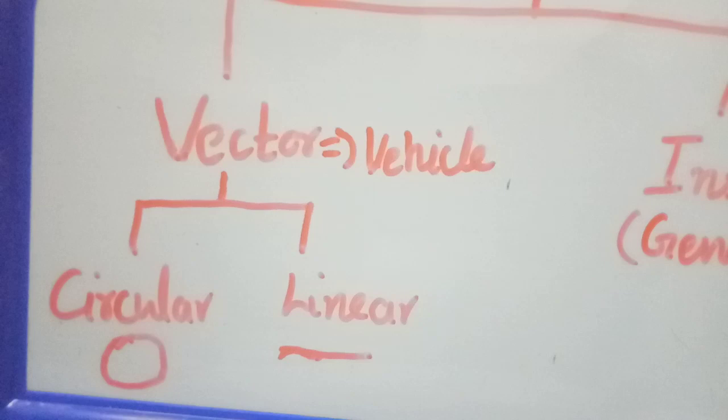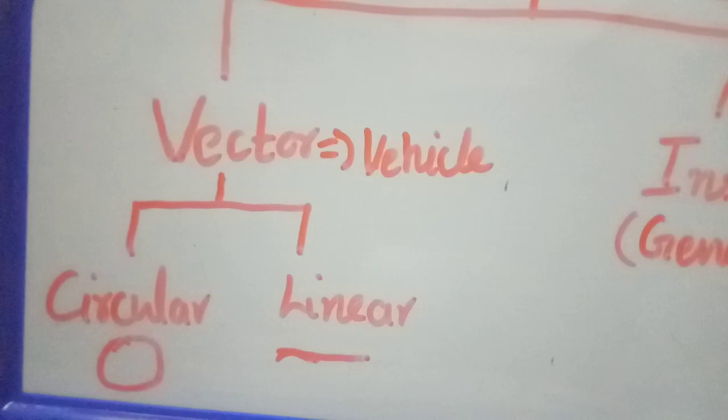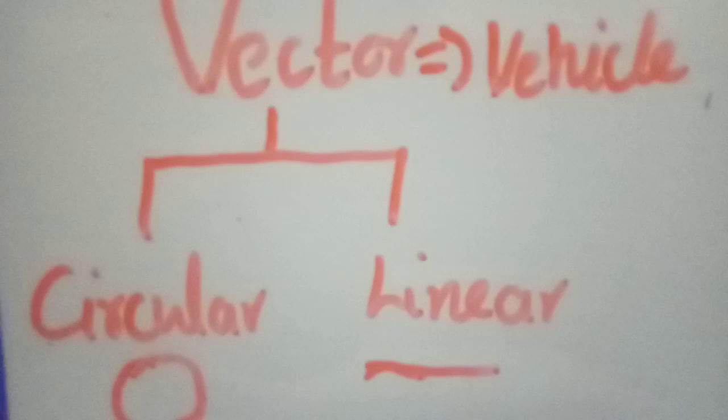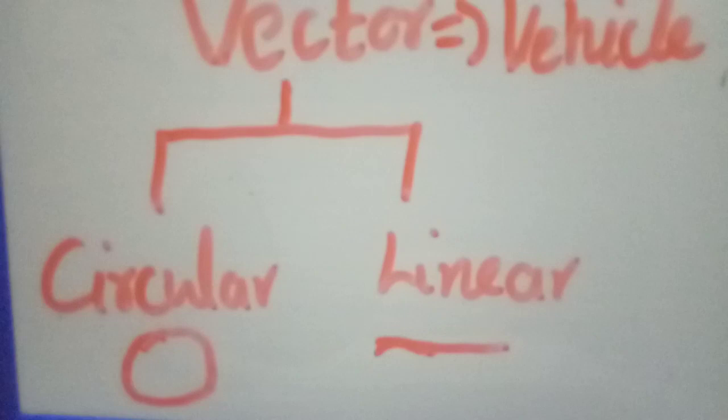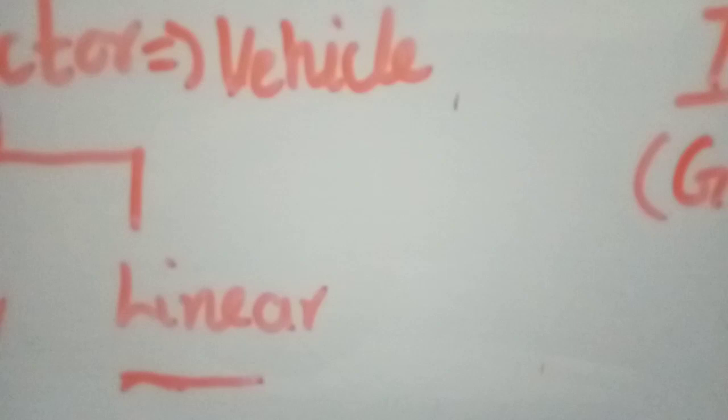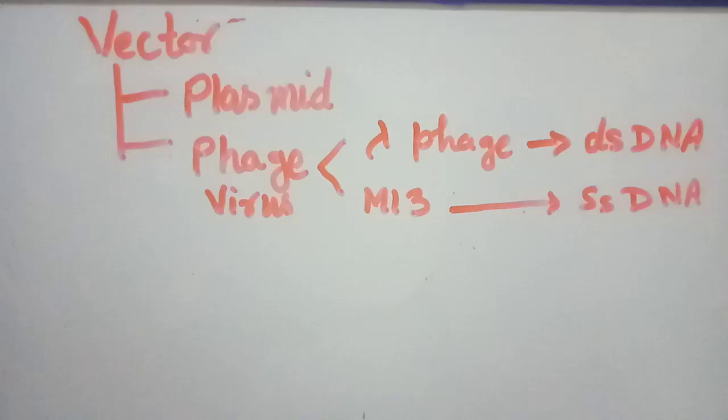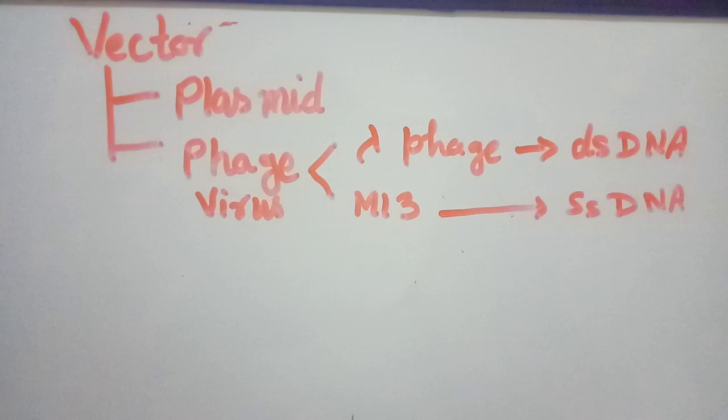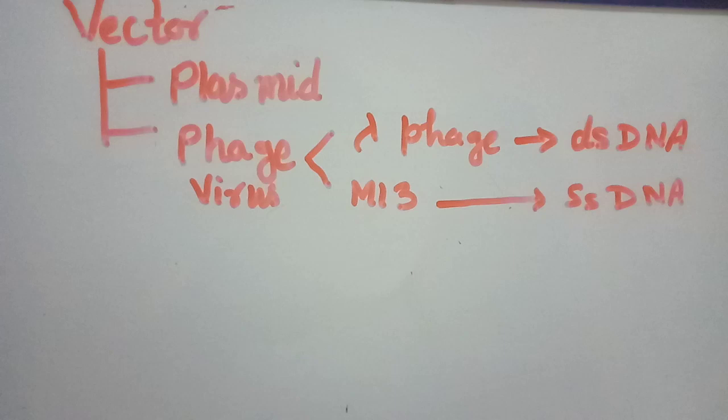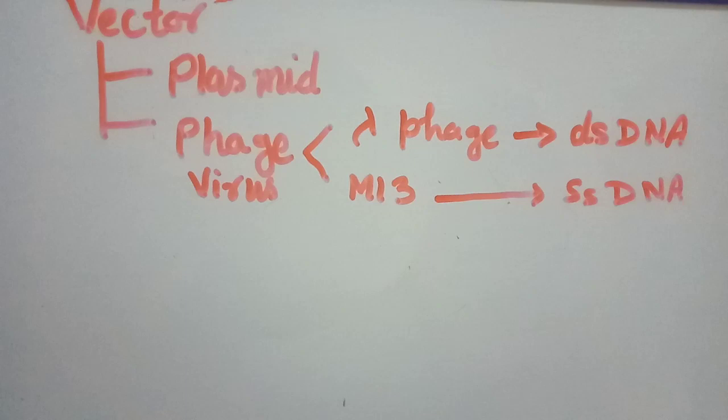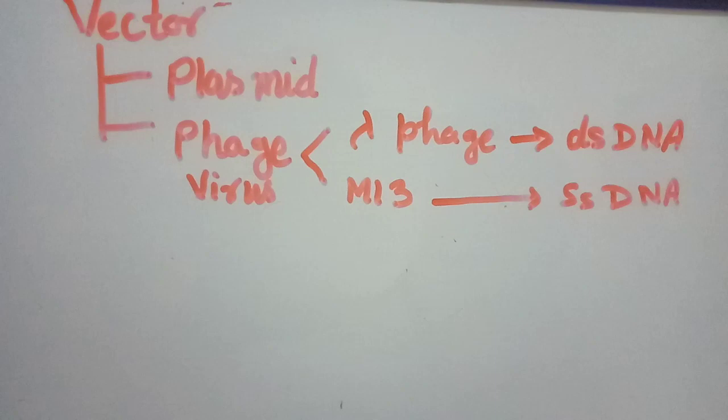Circular vectors include plasmid, which is double-stranded DNA intact in nature, while linear vectors may be certain viruses like M13, which is single-stranded. Phage vectors may be of various types based on plasmid, which is circular in nature, and phage viruses.